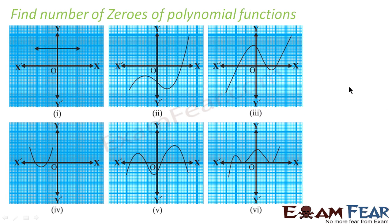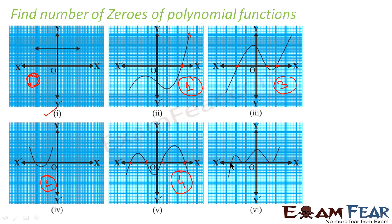Now let's take examples to find the number of zeros from polynomial graphs. First case: the graph is a line parallel to the x-axis — it never meets the x-axis, so the number of zeros is 0. Next graph never meets the x-axis either, so zeros = 0. Another graph meets the x-axis at one point, so zeros = 1. One graph meets at three points, so zeros = 3. Another meets at two points, so zeros = 2. One meets at four points, so zeros = 4. Another meets at three points, so zeros = 3.